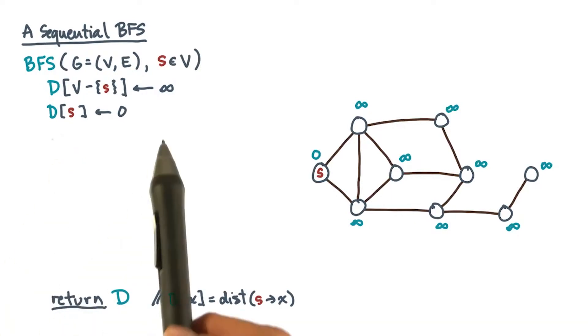Notice that according to this initialization convention, if there is no path from s to x, then we'll get an infinity at d of x.